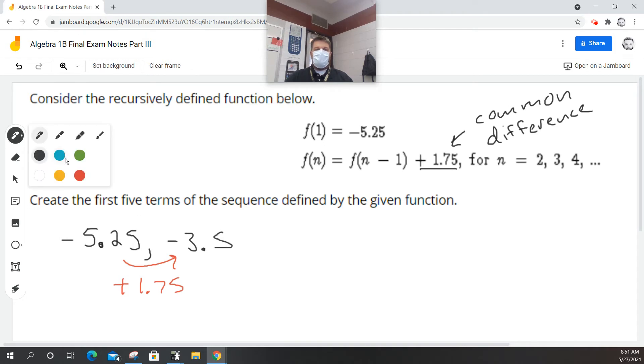So that's the second term. Now I got to do the next term. So to do the next term, guess what I do? I'm just going to add 1.75. So let's do that on the calculator.